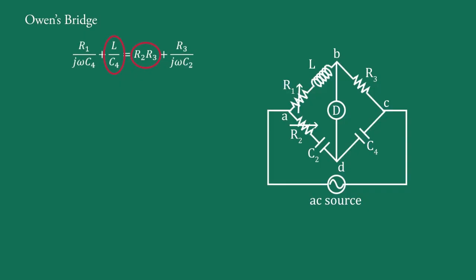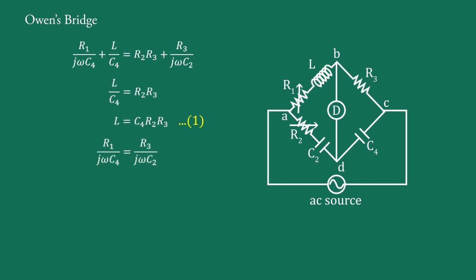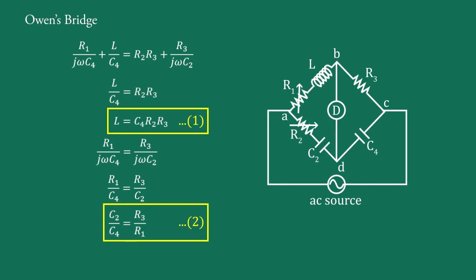Equating the real parts of this equation we have L upon C4 equal to R2·R3, and therefore L equal to C4·R2·R3 — call this equation 1. Equating the imaginary parts we have R1 upon j-omega-C4 equal to R3 upon C2 — call this equation 2. These equations 1 and 2 represent the two conditions required to balance the bridge.